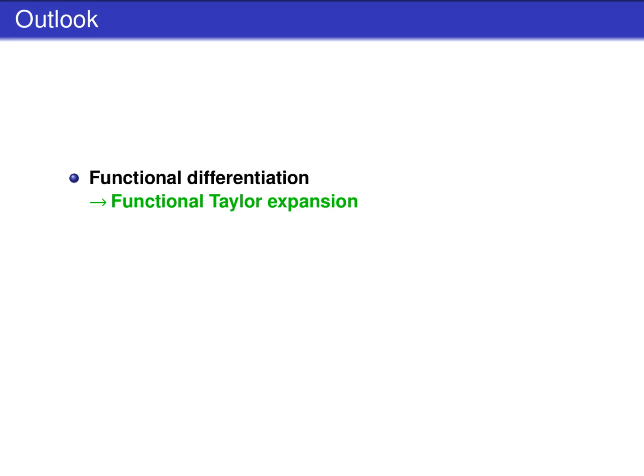Despite the mentioned differences between functionals and functions, there exist several parallels. For example, one can derive functionals. This is called functional differentiation. As a consequence of functional differentiation, there exists a functional Taylor expansion. It is also possible to integrate a functional. How this works will be explained in separate videos.